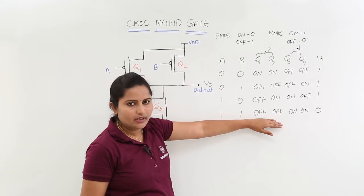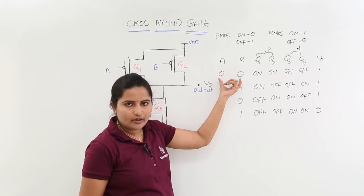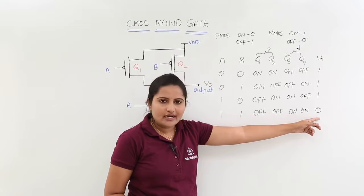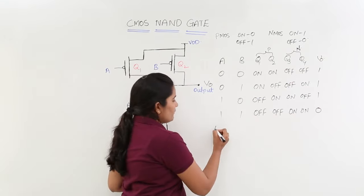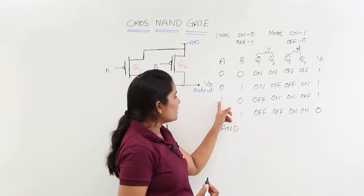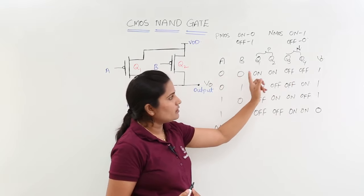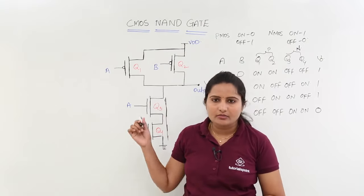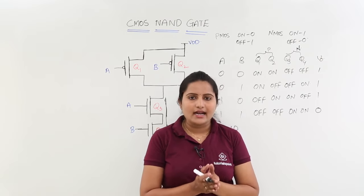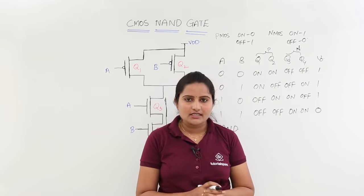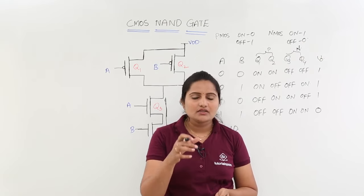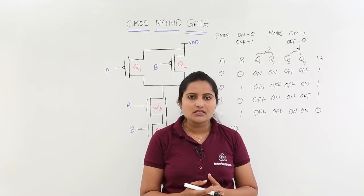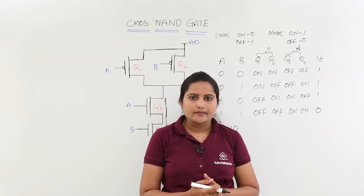If you observe this truth table, when you are providing at least one low input then you are getting high output. Whenever all the inputs are high, then only you are going to get low voltage at output — that means this is the NAND functionality. This is NAND functionality: 1·0 whole bar = 1, 0·1 whole bar = 1, 0·0 whole bar = 1, 1·1 whole bar = 0. By observing this truth table from the circuit, we can say that this works as a NAND gate. This is the designing of CMAS NAND gate — CMAS design is nothing but integrating PMAS with NMAS, where the PMAS structure has pull-up and NMAS structure has pull-down. This way we can design any circuit in CMOS logic.